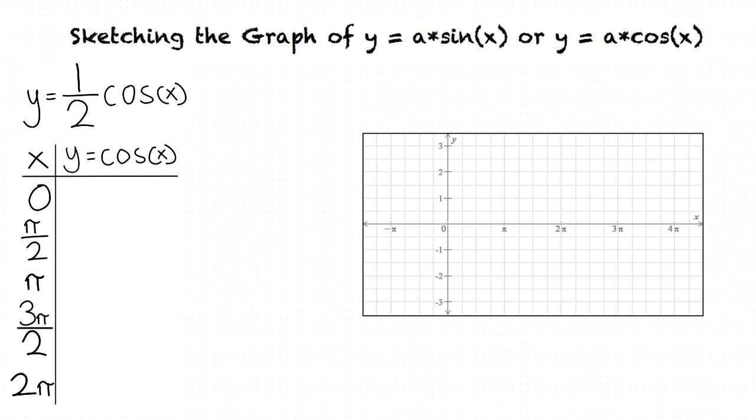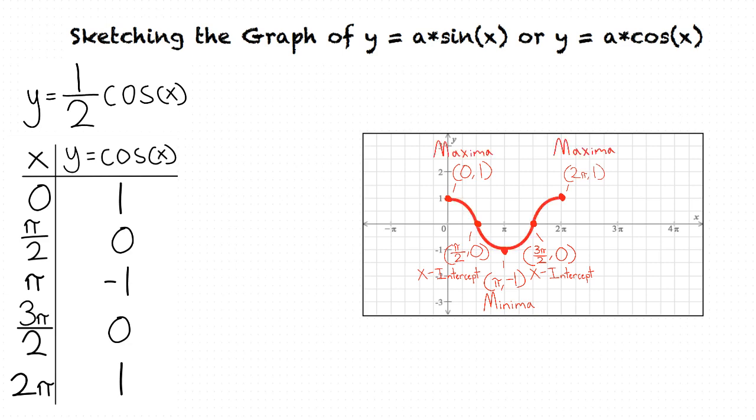What is the significance of these points? How will they help us in graphing this equation? Well, if we take our points and insert them into y equals cosine of x, the results of our y values will be 1, 0, negative 1, 0, and 1. Here we see that we have found the x-intercepts, minima, and maxima of one cycle of y equals cosine of x.